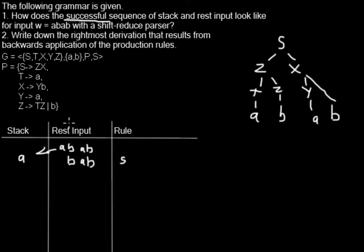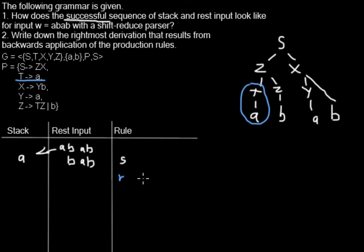I could shift everything over, but that would not lead to the successful trace. So in the next step I will do some reducing. This A on the stack corresponds to the first symbol of the input, and as you can see in the tree, that terminal A comes from T. So I will reduce now with the rule T derives to A, replacing the right-hand side on the stack by the left-hand side. I am left with T on the stack, and the rest input BAB is untouched.